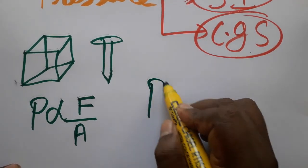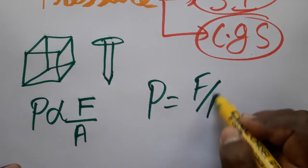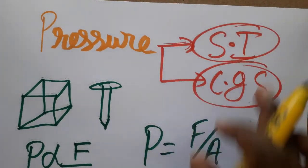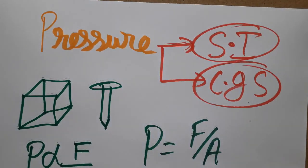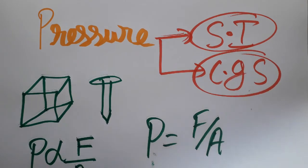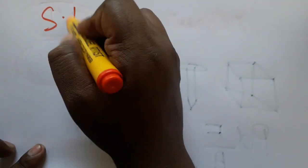So pressure is equal to force per unit area. We are going to discuss two units: the SI system following MKS (meter, kilogram, second) and the CGS system following centimeter, gram, second. First we will do the SI unit.